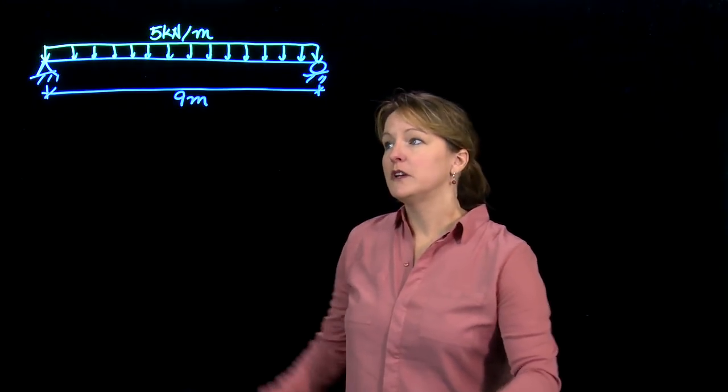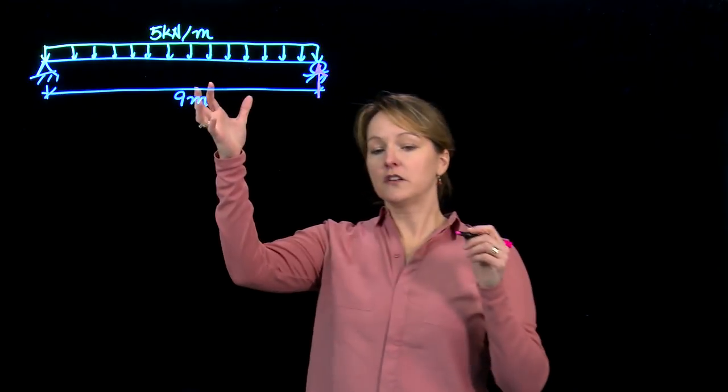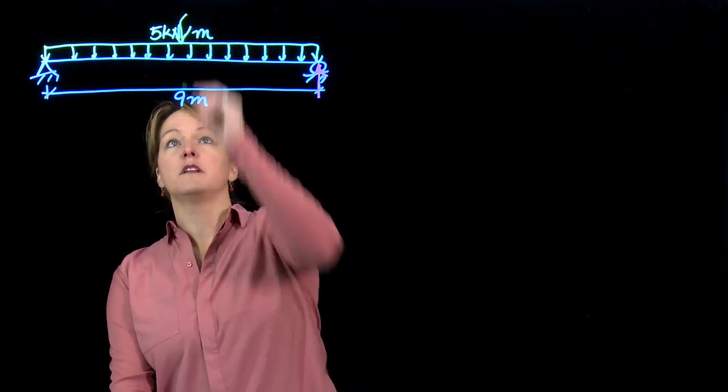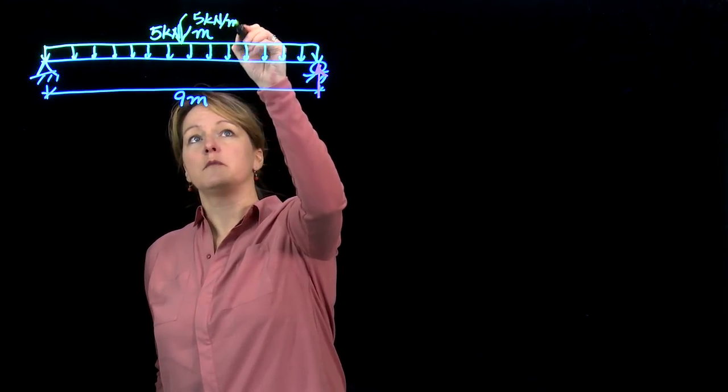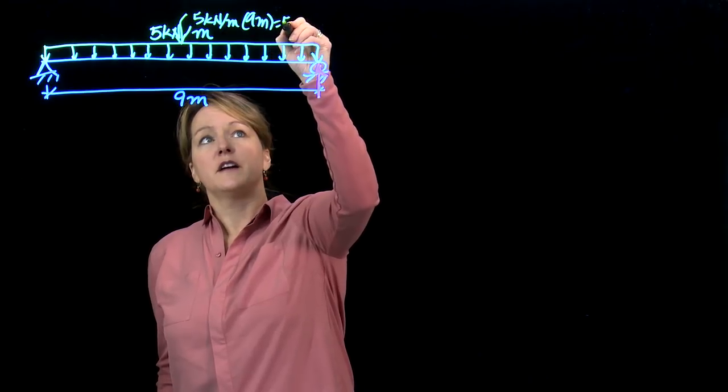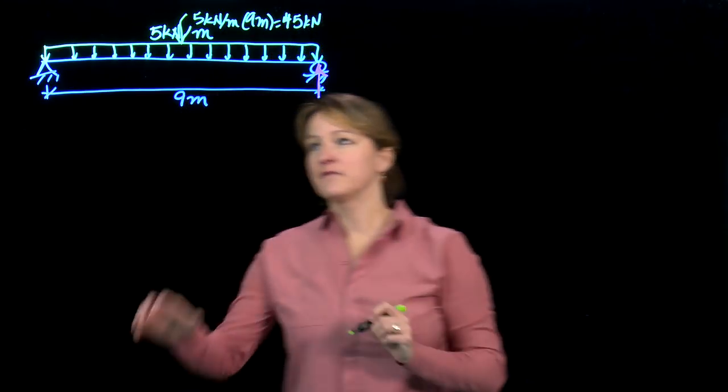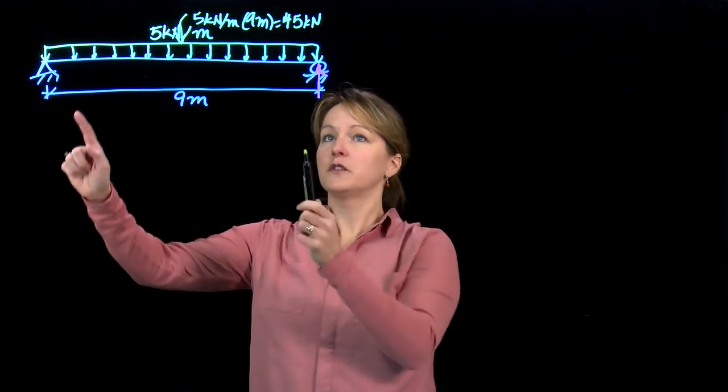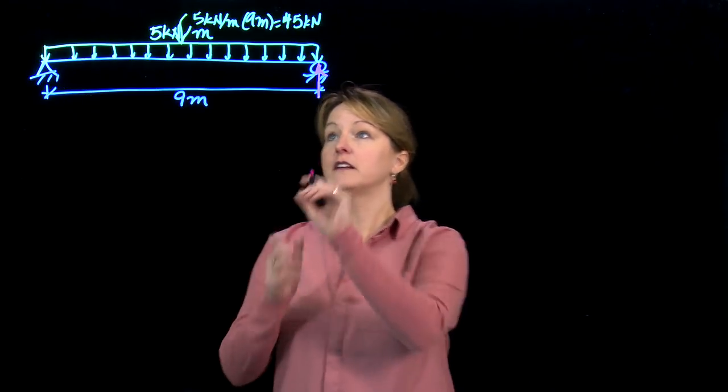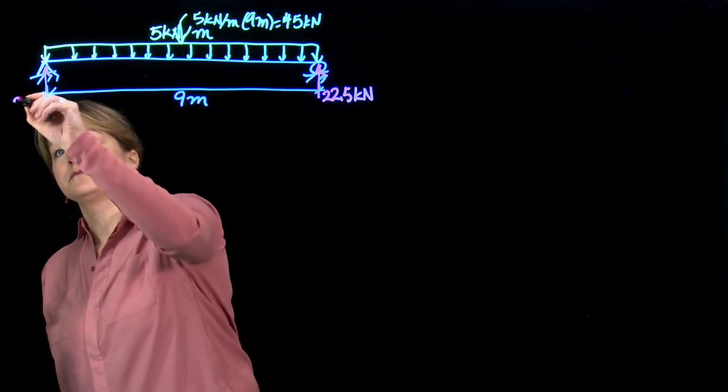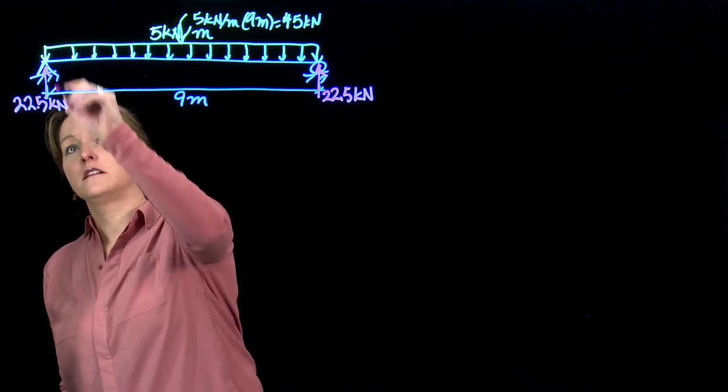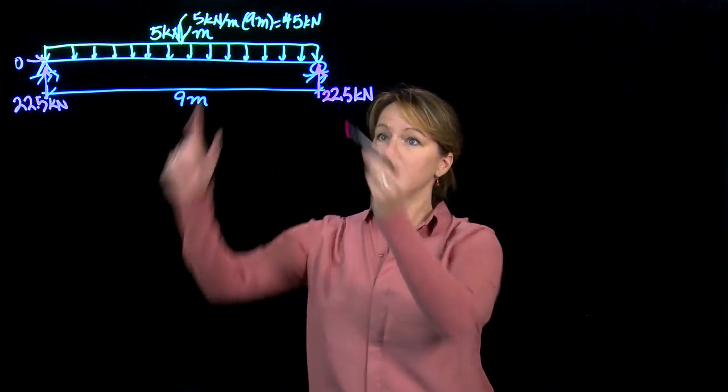Looking at this, we could solve for these reactions. My first step is solving for the reactions using rotational, vertical, and horizontal equilibrium. But looking at the load, I have a total load acting downward in the middle and everything is symmetric. The total downward load is 5 kilonewtons per meter times 9 meters, or 45 kilonewtons. Because everything's symmetric and evenly distributed, it will be half to each side. So I'll have 22.5 and 22.5, and there's nothing acting horizontally. My horizontal reaction will be zero.